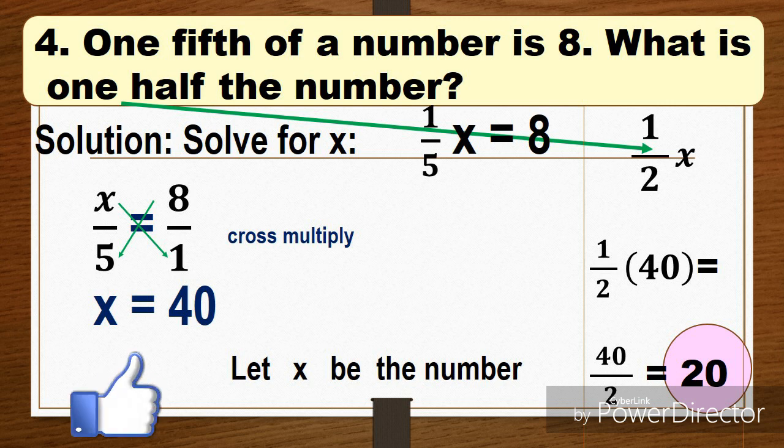...is we do not know what this number is, so we're going to assign a variable for this number and that is x. So let x be the number. 'Is' means equals, then we have eight. So we have now one-fifth x equals eight, and then we're going to solve for x.